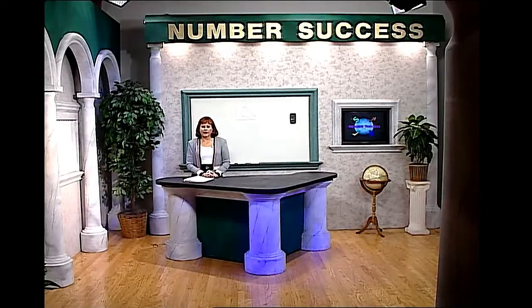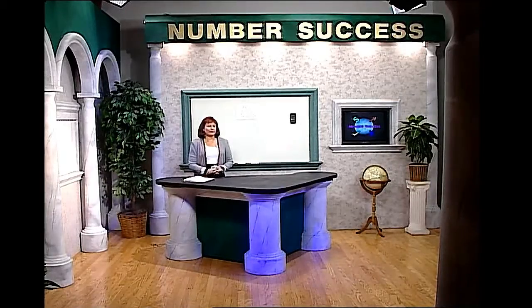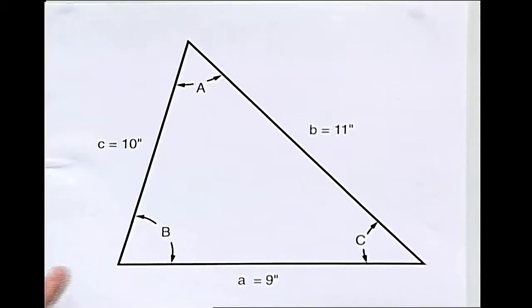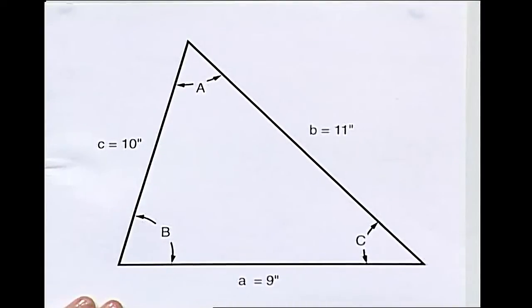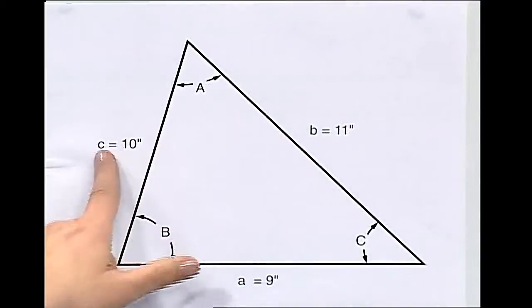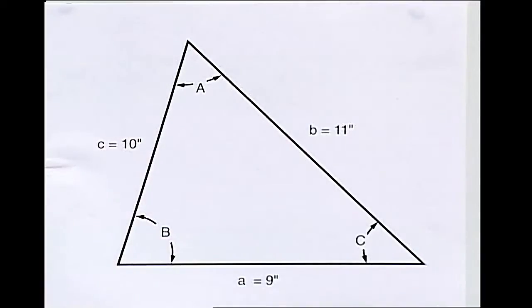Oblique Triangles: All Three Sides Known and Determining Area. This triangle is different from the other examples we've looked at because I don't know any of the angles. Instead, I know the lengths of the three sides.